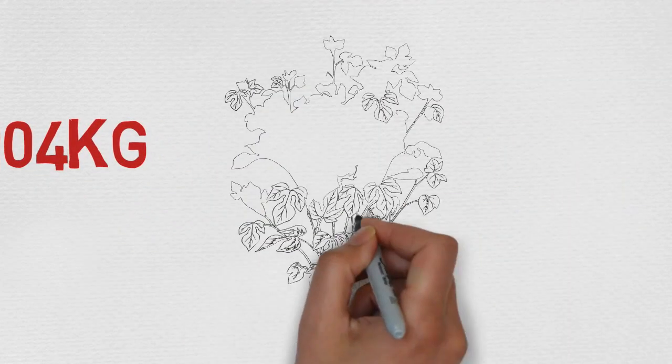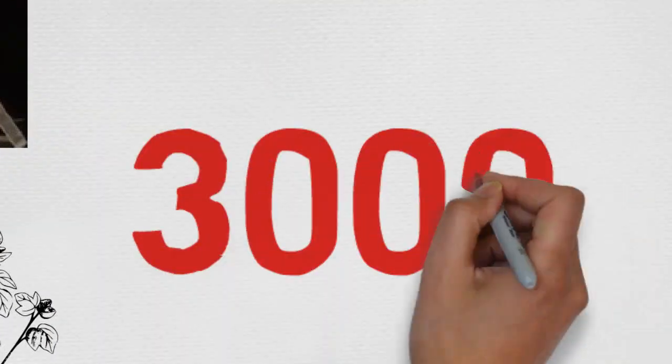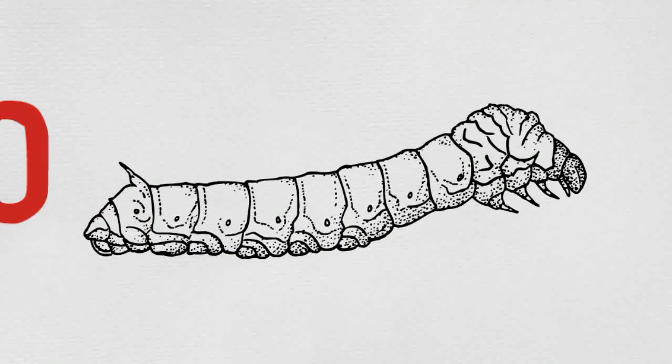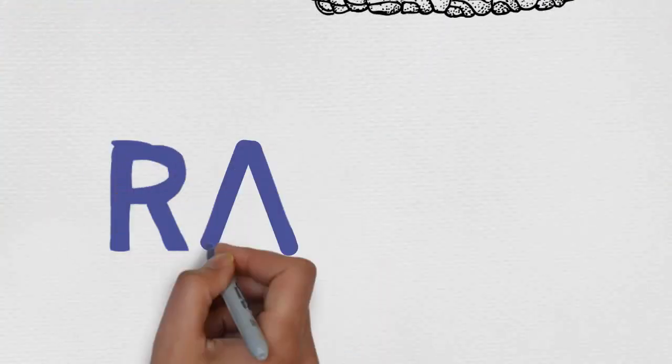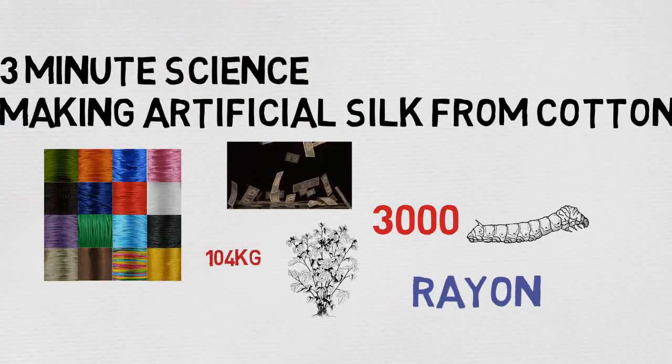For example, to produce 1 kg of silk, 104 kg of mulberry leaves must be eaten by 3000 silkworms. This is why artificial silk, or cheaper alternatives to silk with similar properties, are produced. An example of this is rayon, more than 10 times cheaper than real silk.